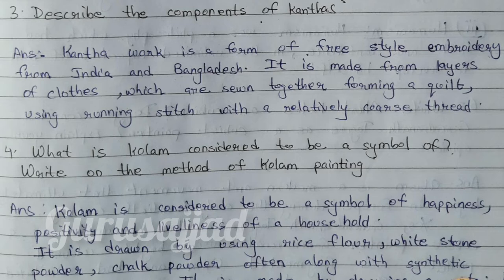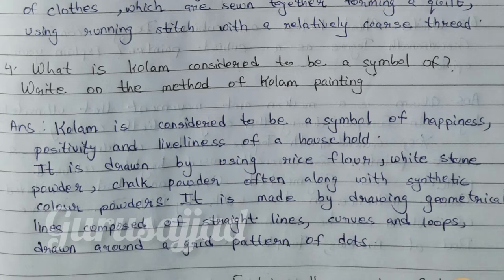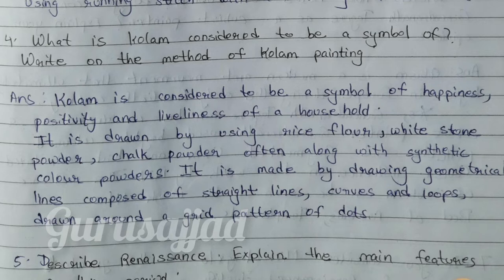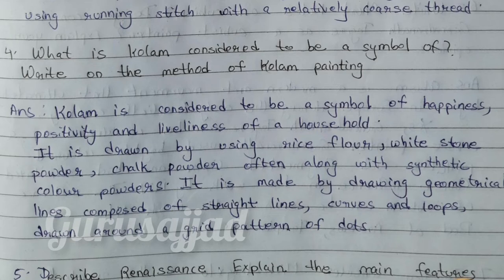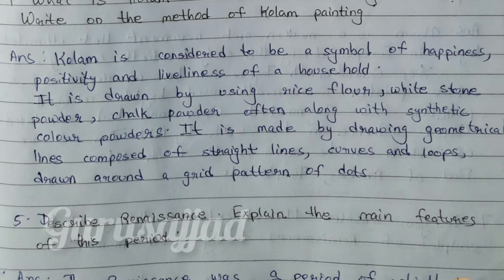Question number 4: What is kolam considered to be a symbol of? Write the method of kolam painting. Answer: Kolam is considered to be a symbol of happiness, positivity, and liveliness of a household. It is drawn by using rice flour, white stone powder, chalk powder, often along with synthetic colour powders. It is made by drawing geometrical lines composed of straight lines, curves, and loops drawn around a grid pattern of dots.